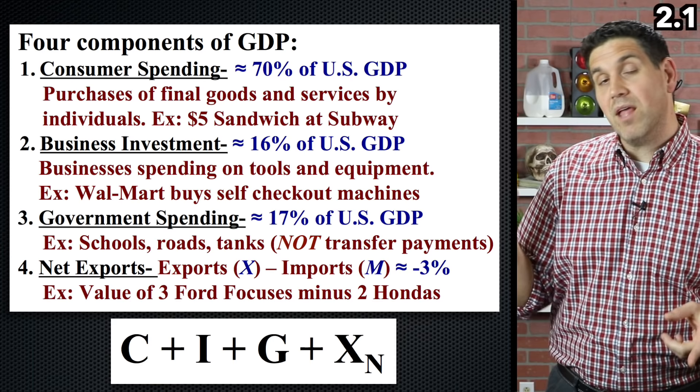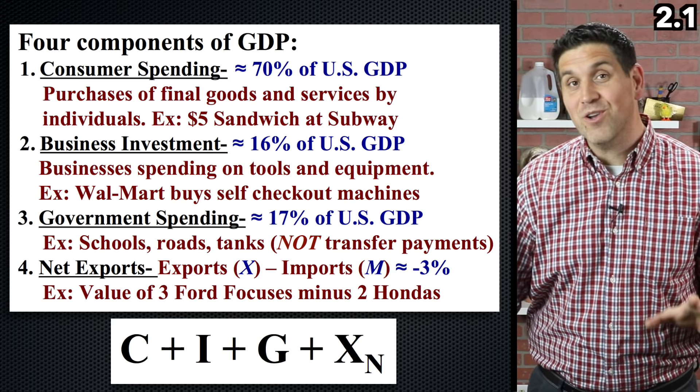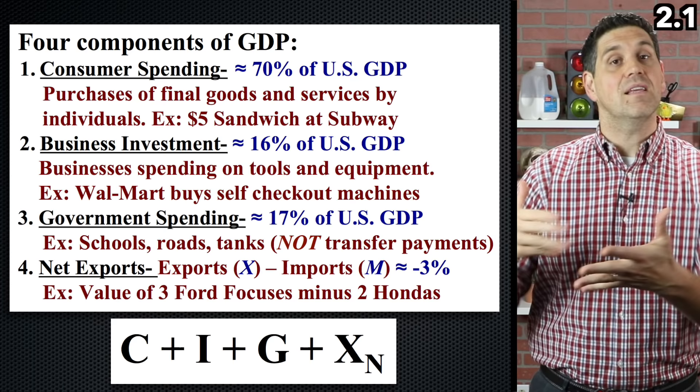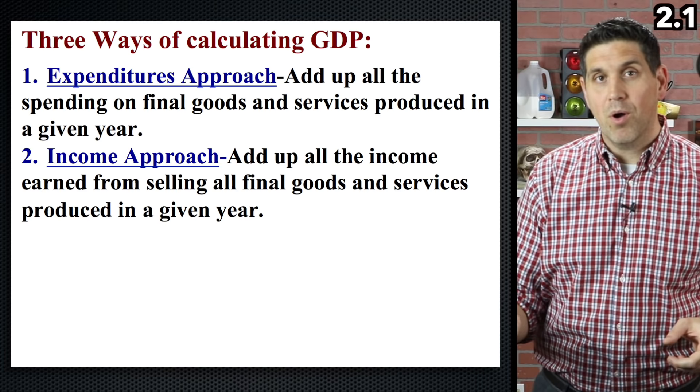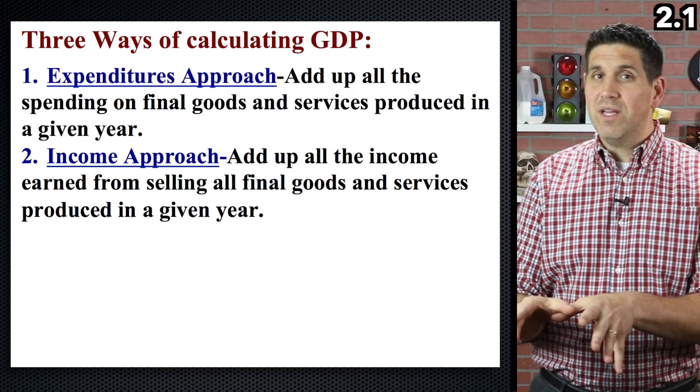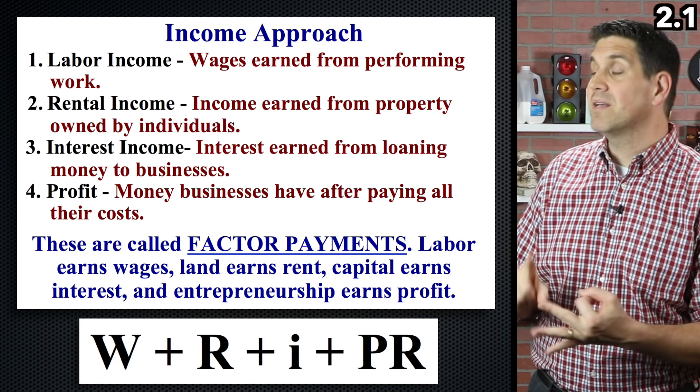The last part of the equation is net exports — exports minus imports. This is the most important equation because you're going to see it all over the place in Units 3 and 4. When we're talking about fixing the economy, we go back to this equation and ask: what is the government trying to do, who are they trying to increase spending for, how are they trying to expand GDP? The other way to measure GDP is the income approach, which adds up all the income from spending. The equation is wages plus rent plus interest plus profit, which equals the total income, or GDP.